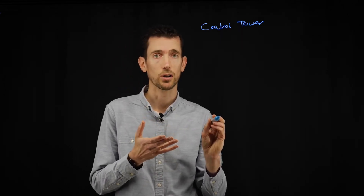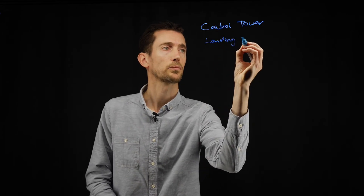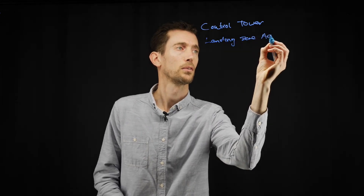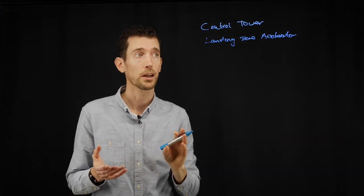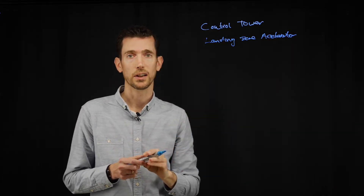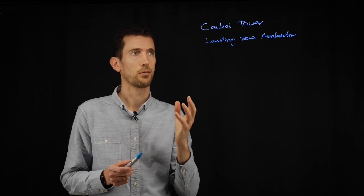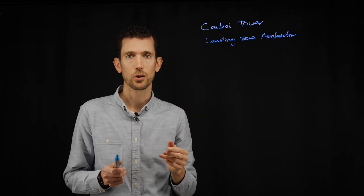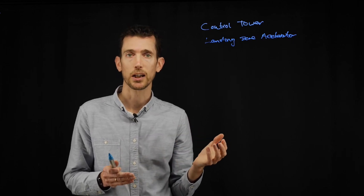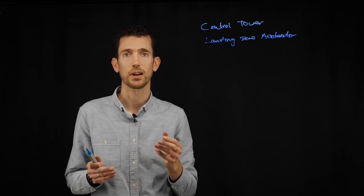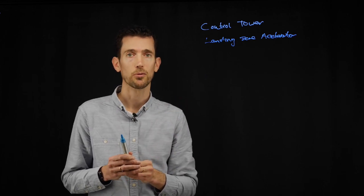So Control Tower is certainly an option, but probably a better one would be the Landing Zone Accelerator. We've talked about this earlier in the video, but the Landing Zone Accelerator really takes it to the next level and would be considered above Control Tower. It allows you to have your infrastructure as code, which is best practice. It's fully supported by AWS as well, so if you do have problems with it you can raise those with AWS support — it's a really good way of moving forward.